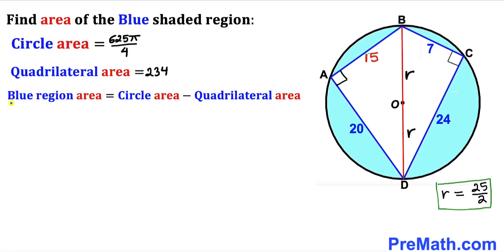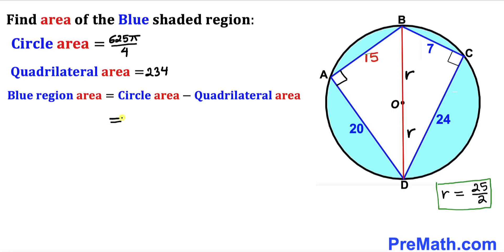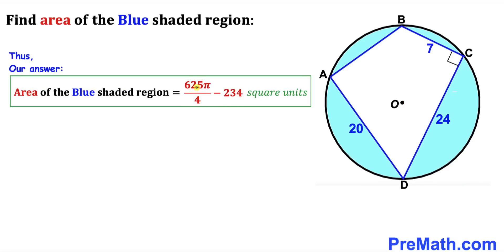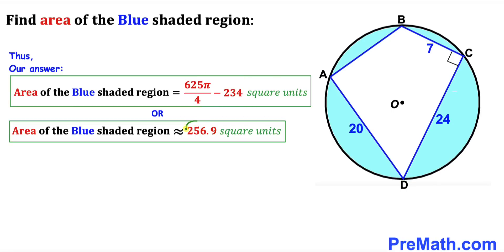Finally, the area of the blue shaded region = area of circle − area of quadrilateral ABCD = 625π/4 − 234 square units, which is approximately 256.9 square units. Thanks for watching and please don't forget to subscribe to the channel for more exciting videos!